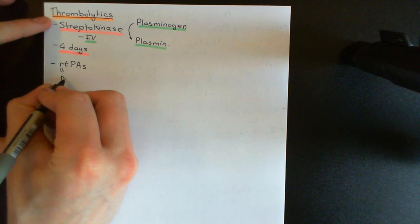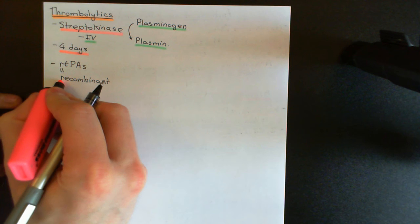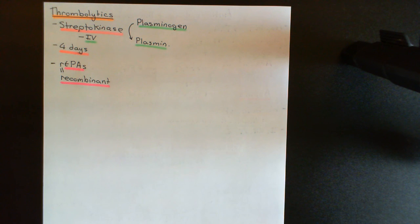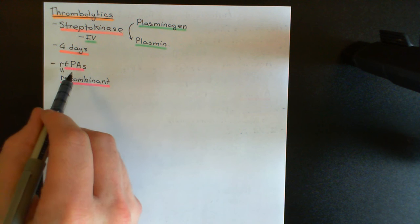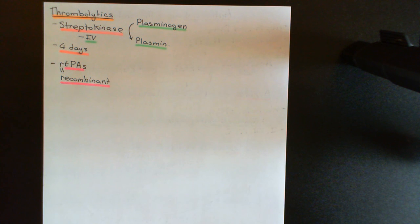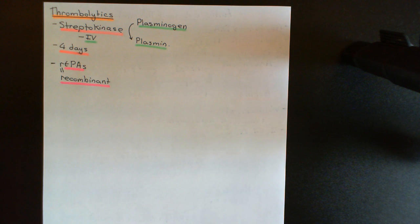The 'r' stands for recombinant, and TPA stands for tissue plasminogen activator. Tissue plasminogen activator is released by endothelial cells and is an endogenous activator of plasminogen — it activates plasminogen in the blood to form plasmin, and this is how the body endogenously activates fibrinolysis, the breakdown of blood clots. Using recombinant DNA technology, we put the gene for tissue plasminogen activator into another organism, most likely a bacterium, and get those bacteria to produce this enzyme for us.